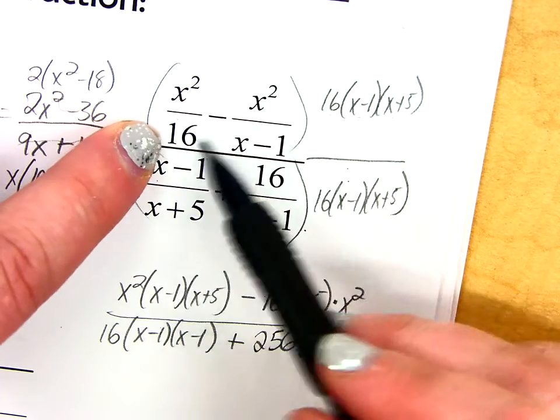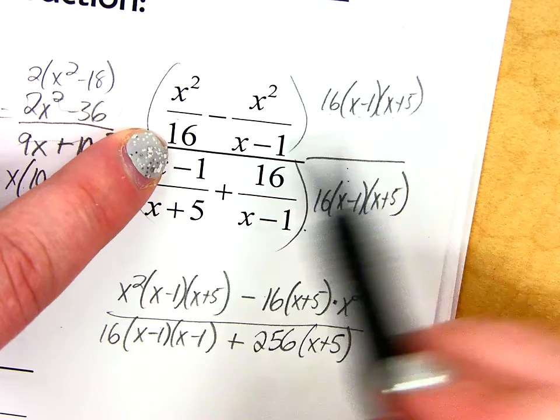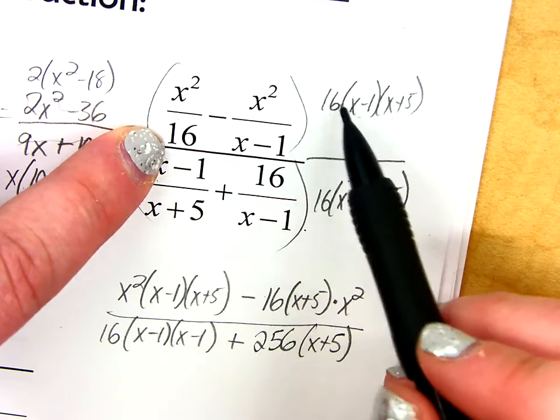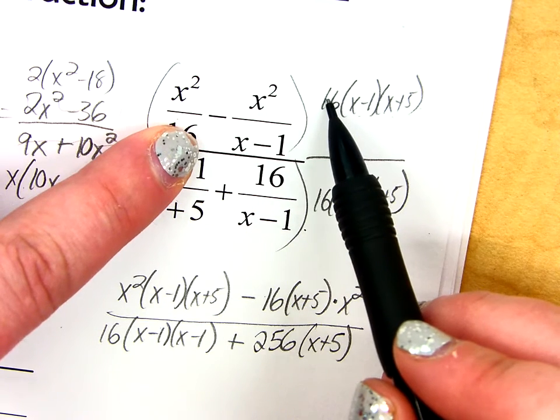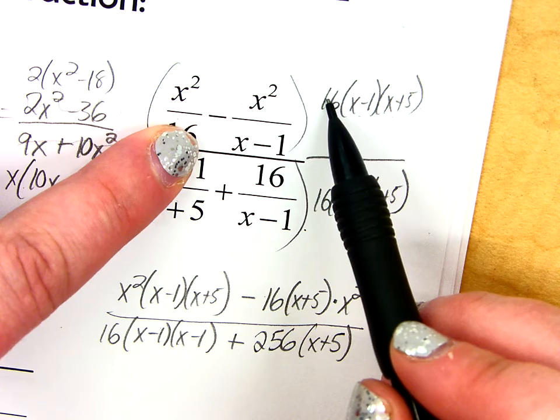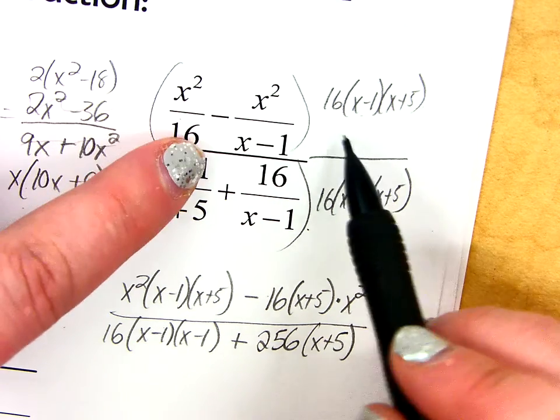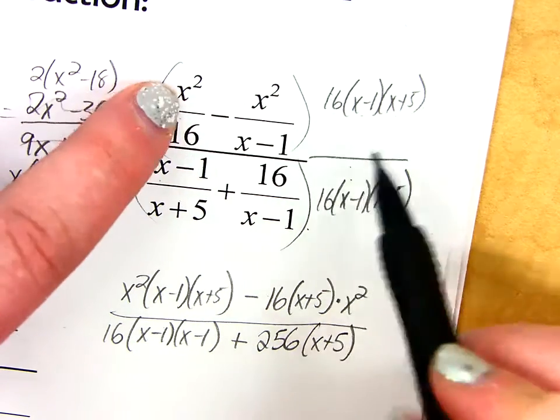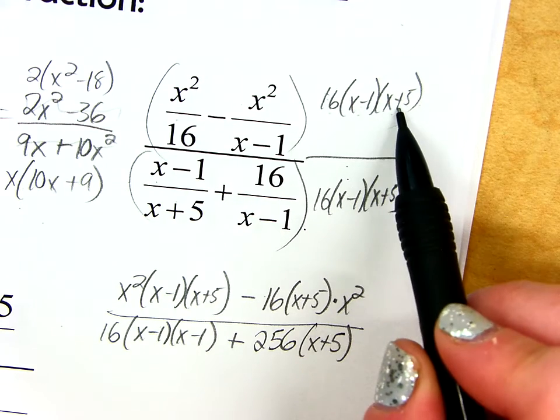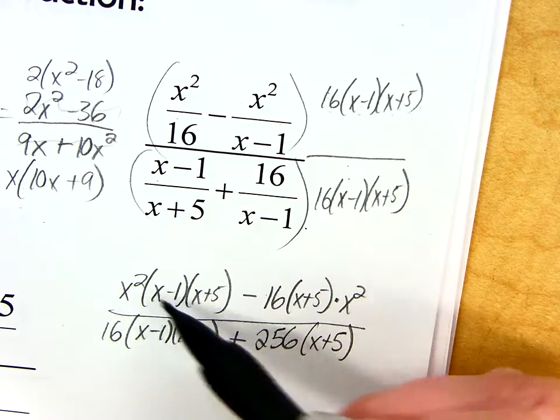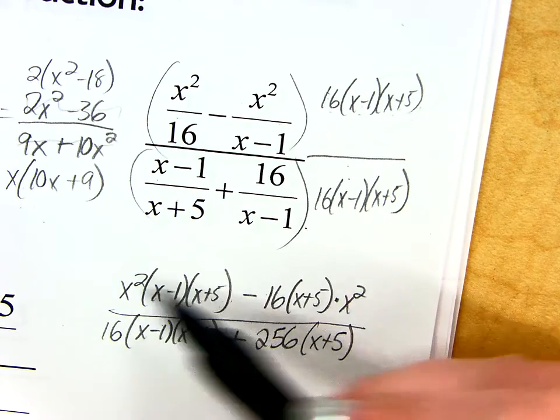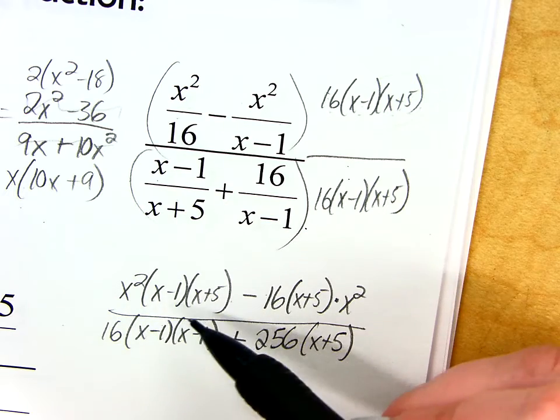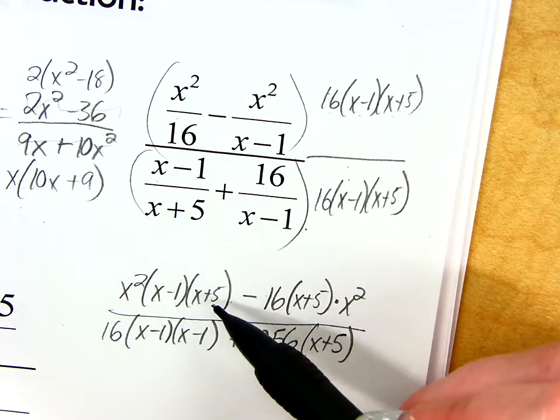So, when you divide down, when I take this and I divide it by 16, those 16s go away. But now, I need to multiply that answer by the numerator. So, the 16s are gone, but I'm going to have x squared times x minus 1 times x plus 5. So, that's what I've written right here. I do have to do that multiplication out, but I just wanted you to see where that's coming from.